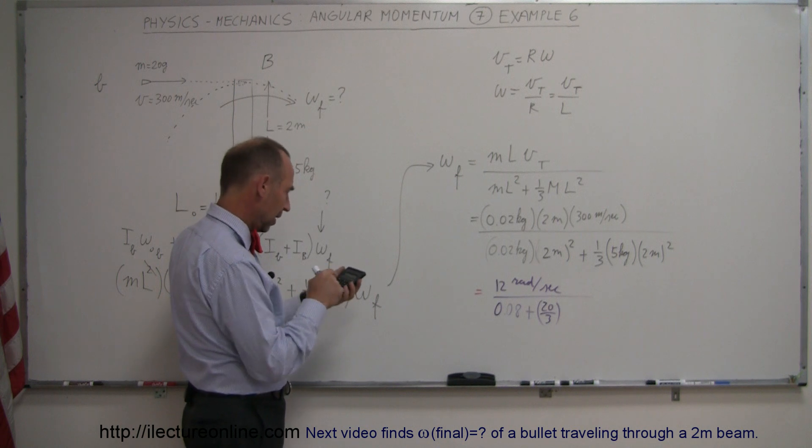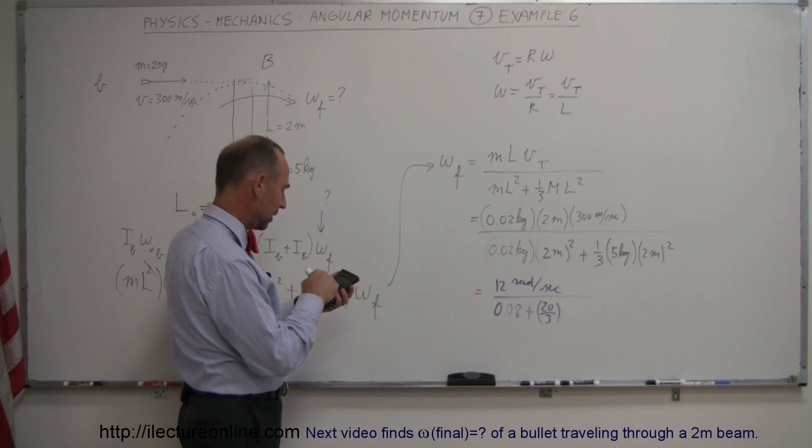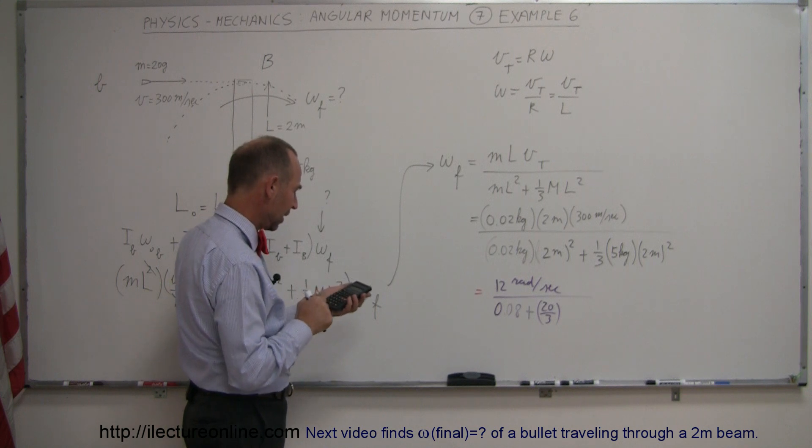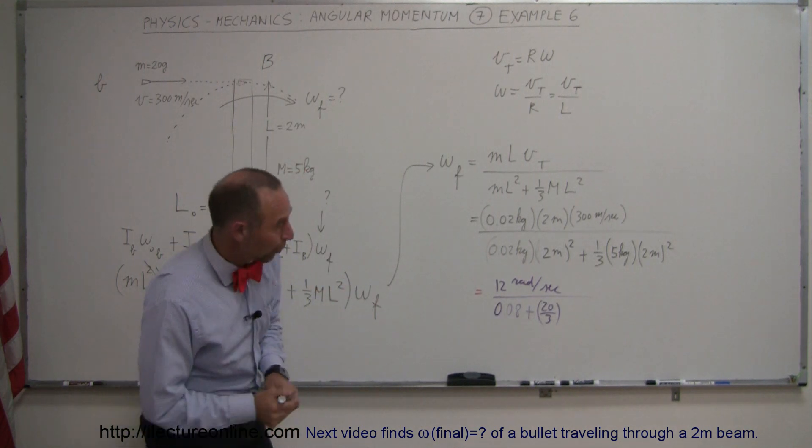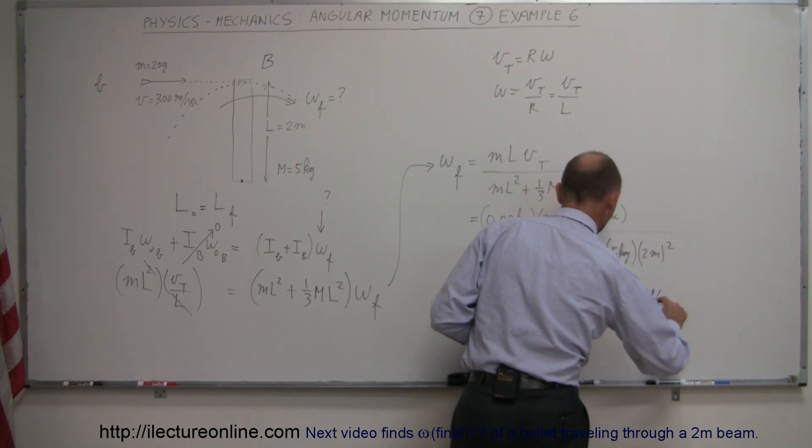So we have the denominator would be 20 divided by 3 plus 0.08. We take the inverse of that and multiply it times 12, and we get 1.78 radians per second.